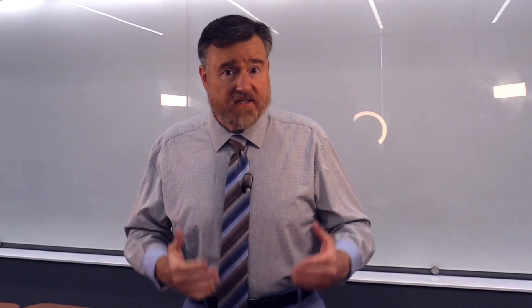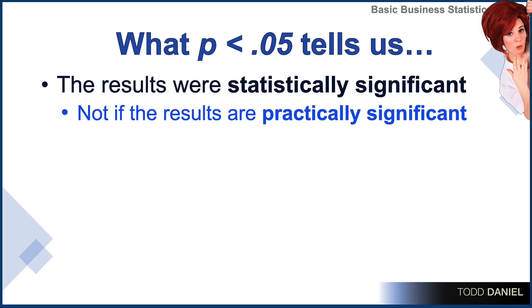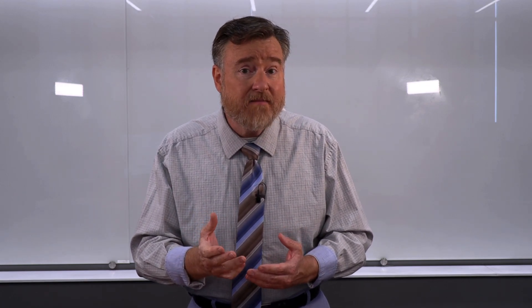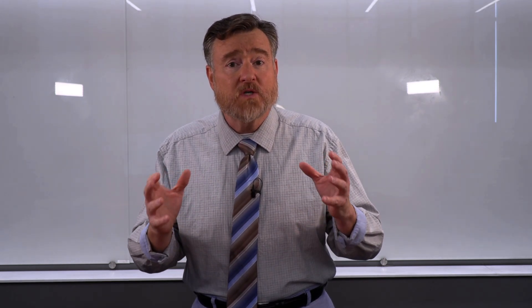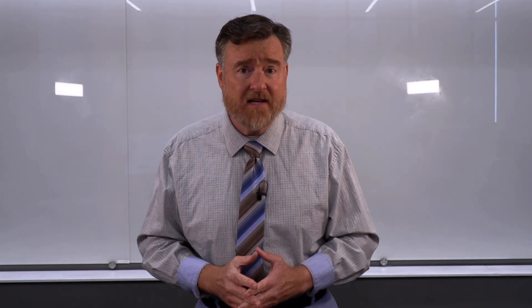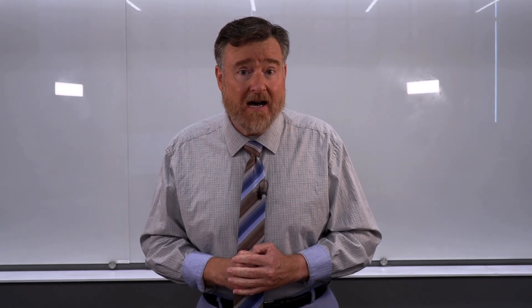Here is what statistical significance p less than 0.05 actually tells us. It means that the results were different — statistically significantly different — but not whether the results are practically significant. Yes, this intervention had a tiny effect on a small number of students. It was a real effect, but if we think about how much money we're spending on this education program, the costs are just not worth the benefits.